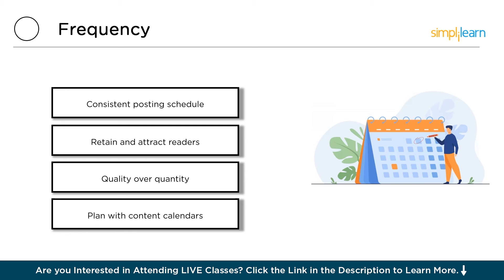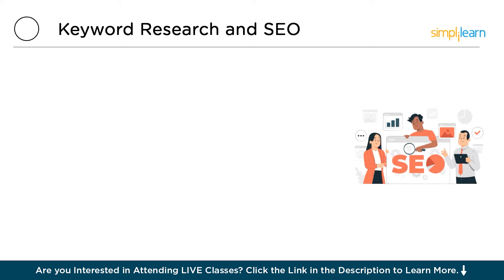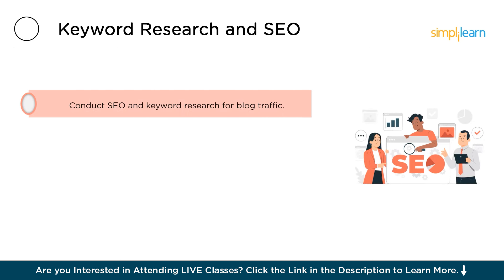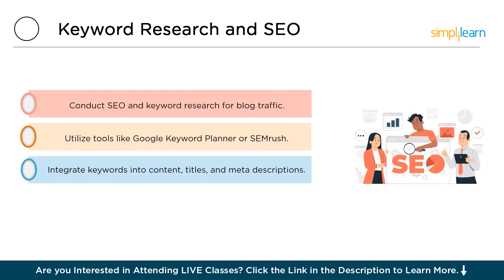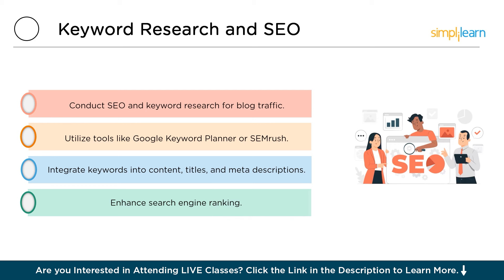Utilize content calendars to plan your posts in advance. This strategic approach ensures you maintain a steady flow of fresh, engaging content. After frequency, keyword research and SEO are essential for driving traffic to your blog. Use tools like Google Keyword Planner or SEMrush to find relevant keywords. Incorporating these keywords into your content, titles, and meta descriptions can significantly enhance your blog's search engine ranking, making it easier for potential readers to find you.